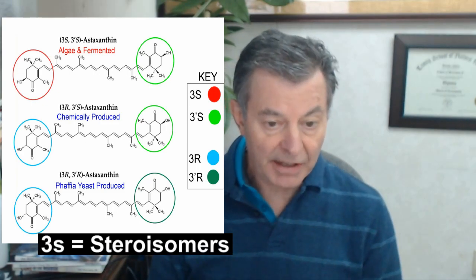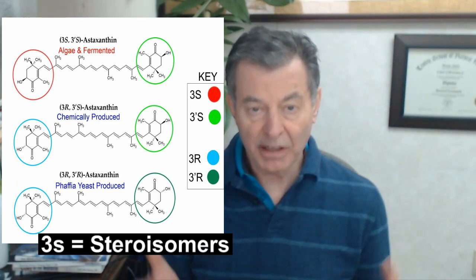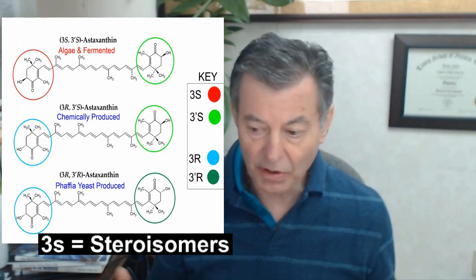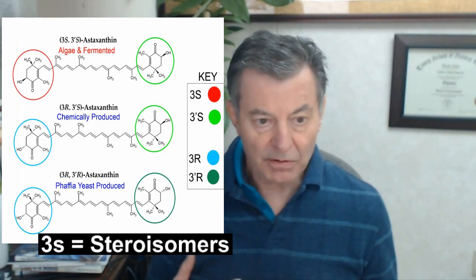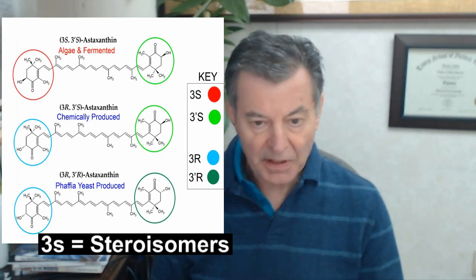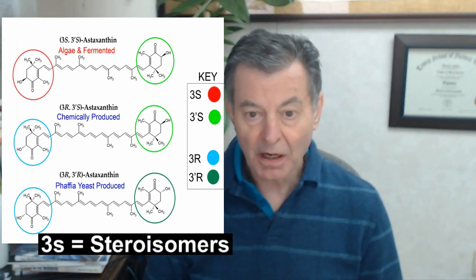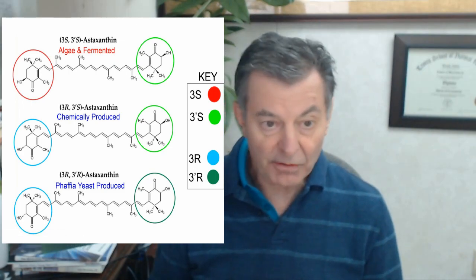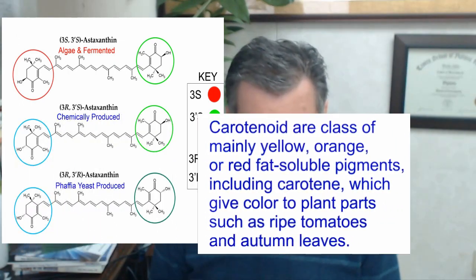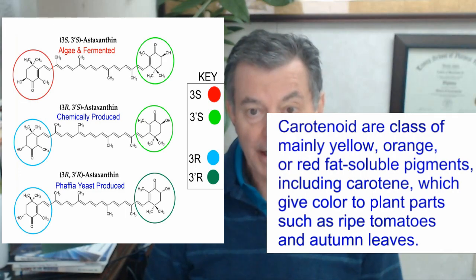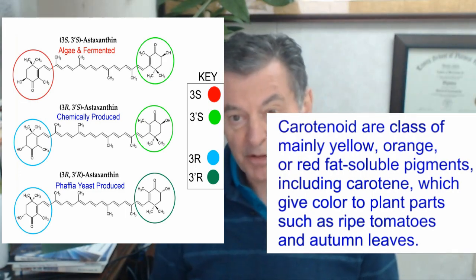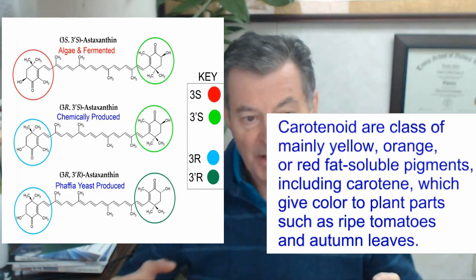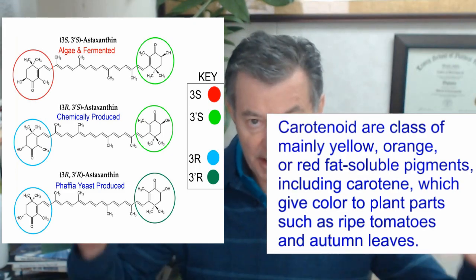You'll get some astaxanthin — and by the way, what is astaxanthin? It's the most powerful carotenoid in the world. You talk about beta-carotene, lycopene, even vitamin A, which is kind of beta-carotene, there's alpha-carotene, zeaxanthin, cryptoxanthin, canthaxanthin — there's all these different carotenoids, and astaxanthin is at the top.